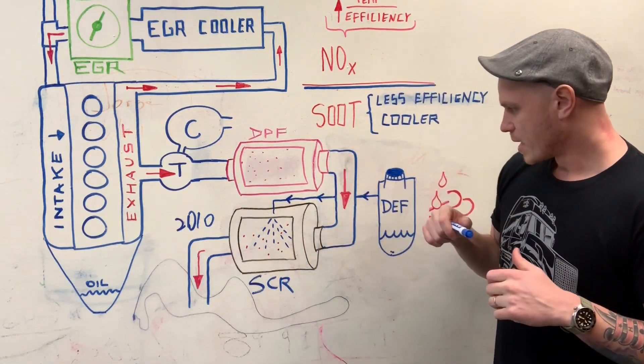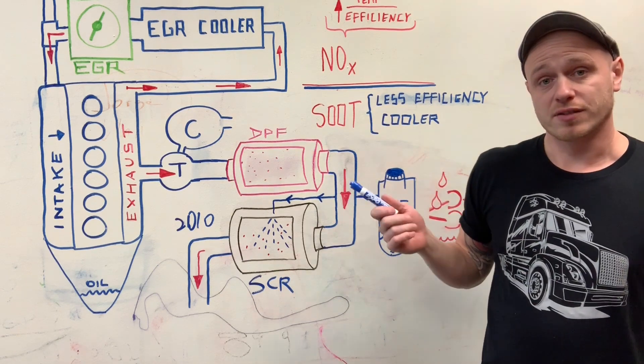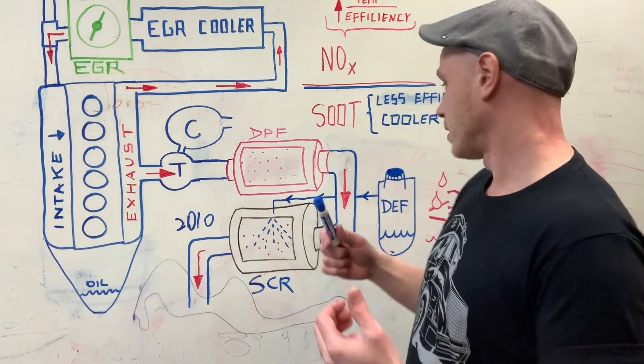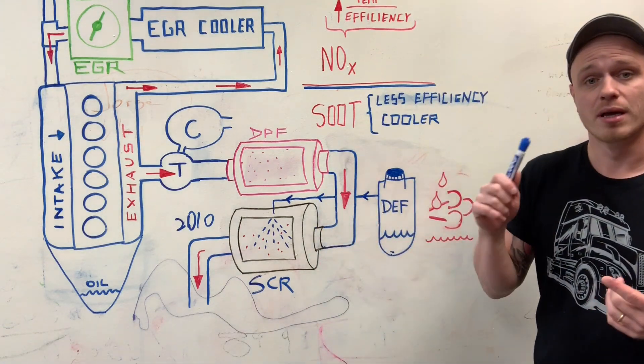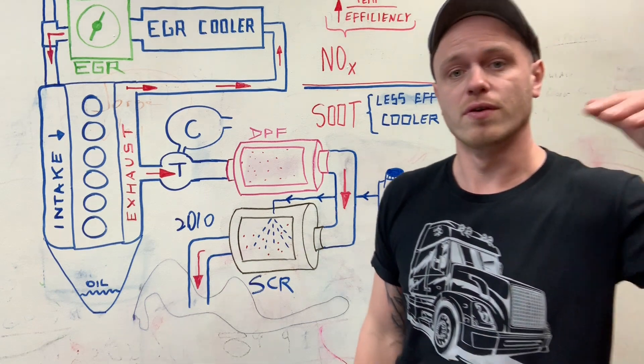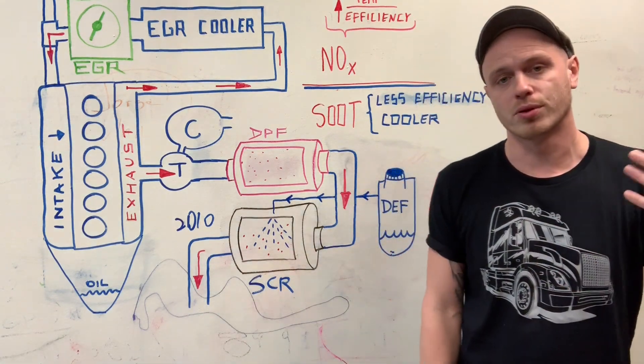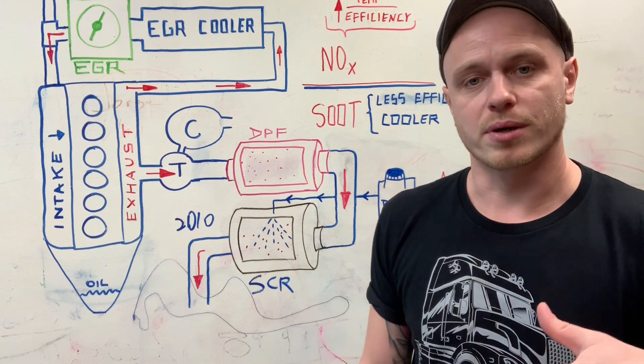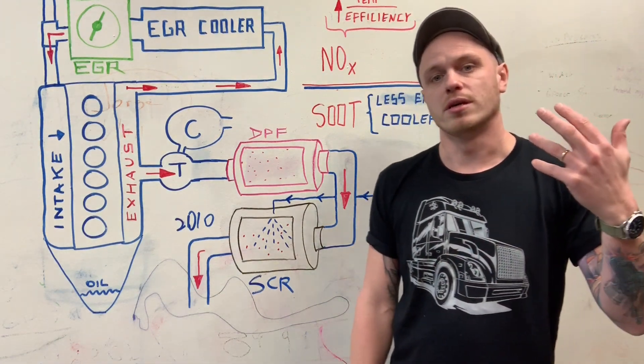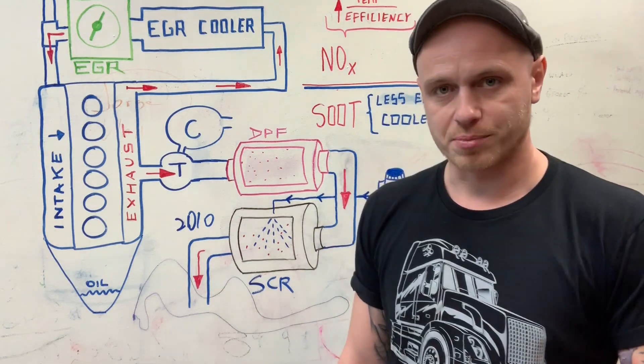That's pretty much it as far as how that works. What I want you to remember is it's the tank with the blue cap. Make sure you keep the level above reserve because if you run out, it will put your truck into limp mode and you can only drive at five miles per hour.